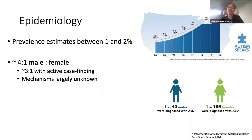Prevalence estimates of autism have steadily increased from less than 0.4% in the 1970s to current estimates of 1 to 2%. The increase is largely explained by broadening diagnostic criteria to individuals without intellectual disability and milder impairments, and not environmental factors. There are marked sex and gender differences in autism; the male to female ratio is approximately 4 to 1 in clinical and health registry cohorts, but closer to 3 to 1 in general population studies with active case finding.